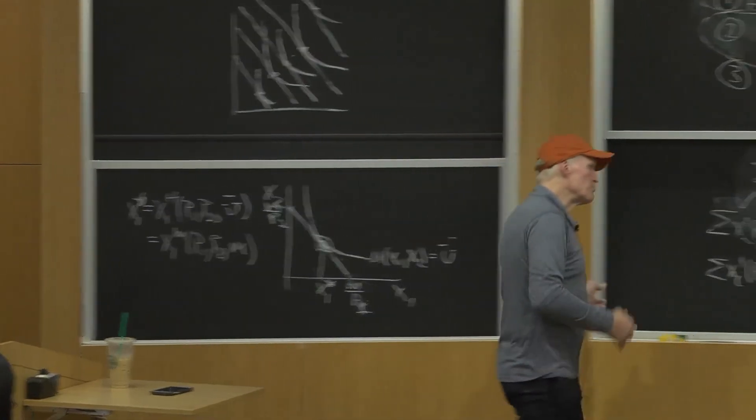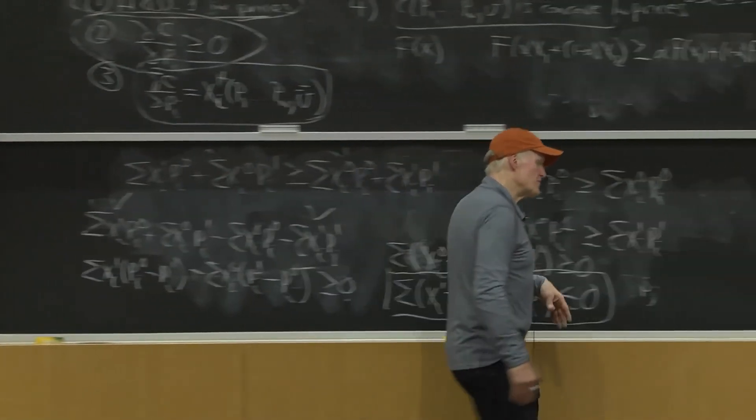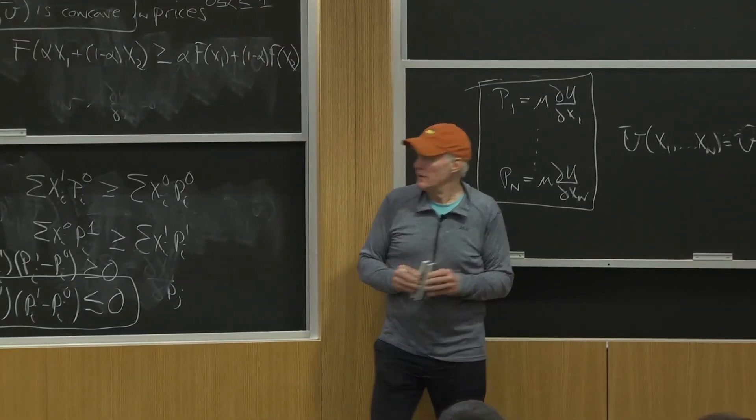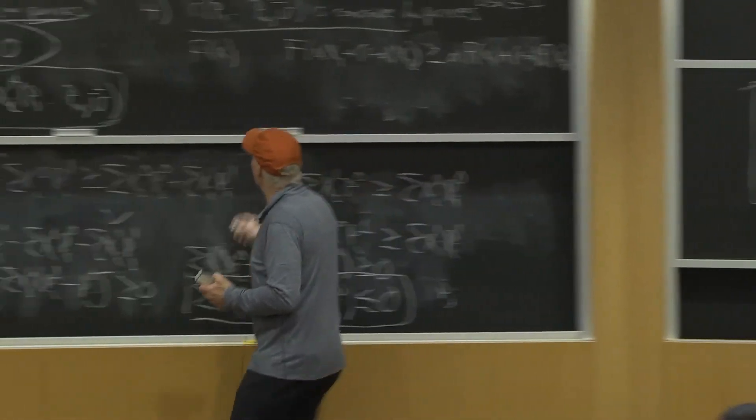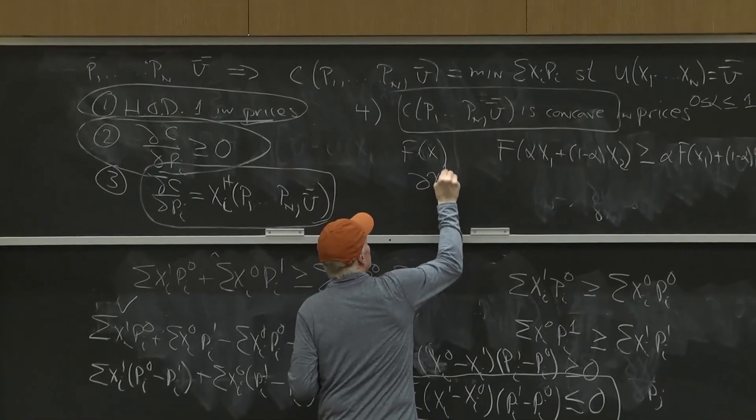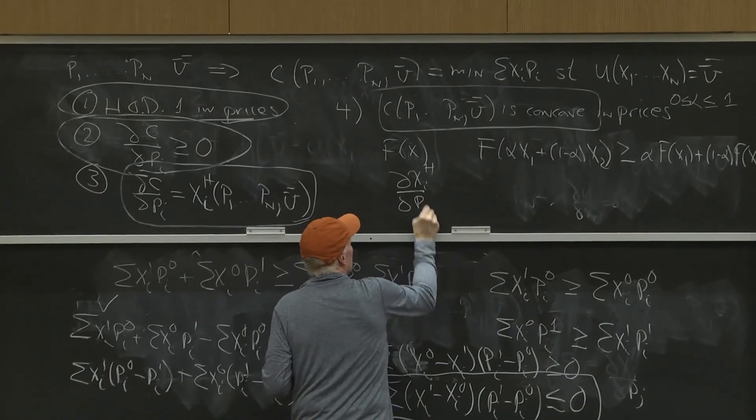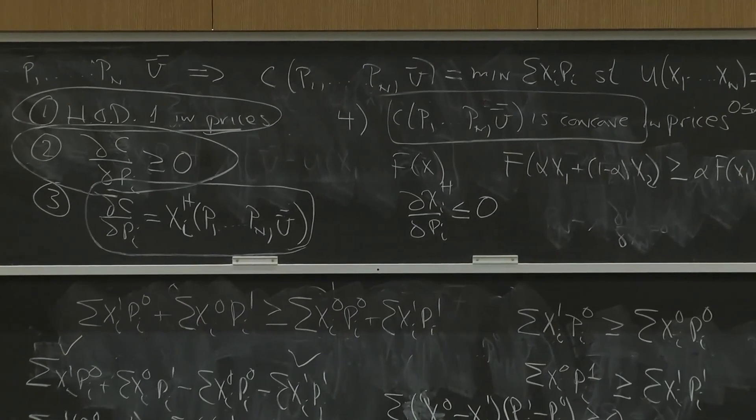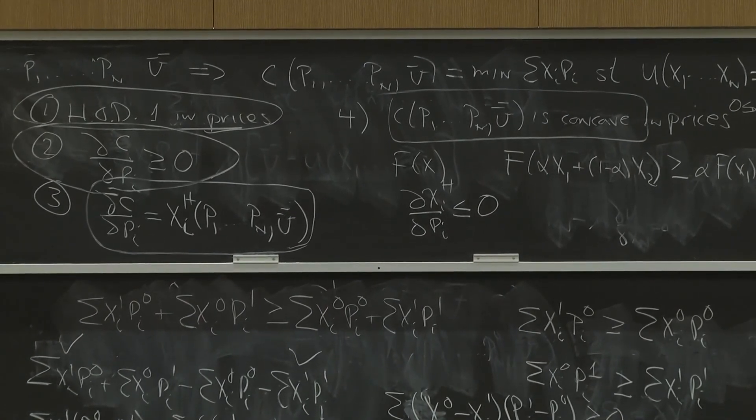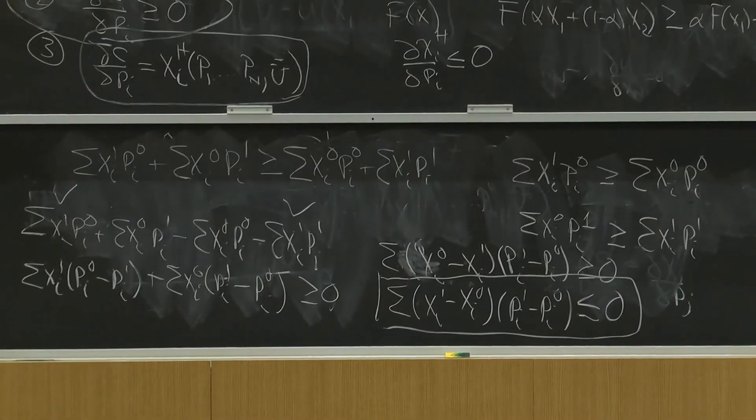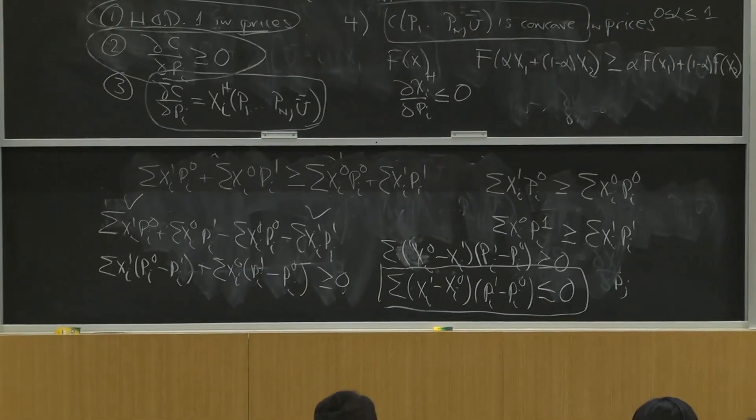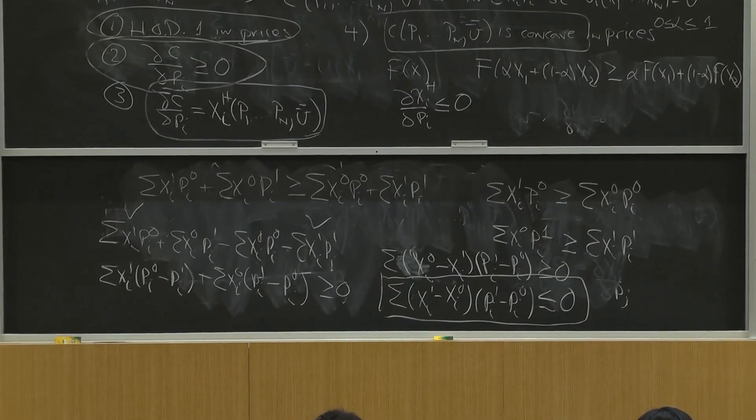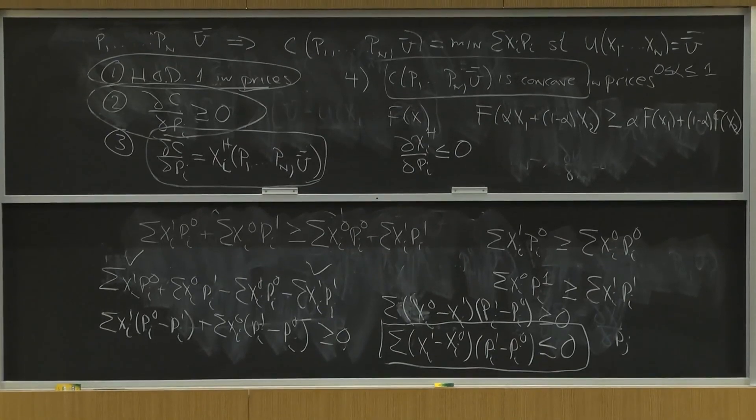So we can directly prove the law of demand for the Hicksian demand curve. That is, partial XIH partial PI less than or equal to zero. More generally, the Hicksian demand system is concave, which is actually just this relationship I put on the board. But certainly good by good, the quantities have to be non-increasing in their prices for the Hicksian demand curve.